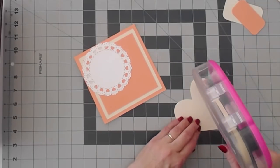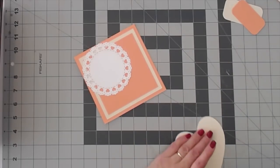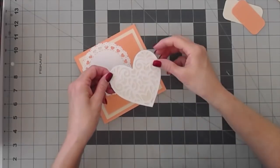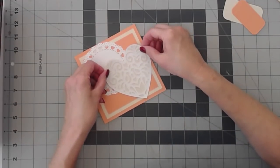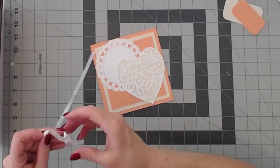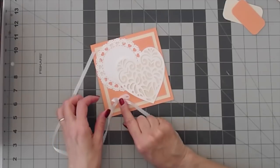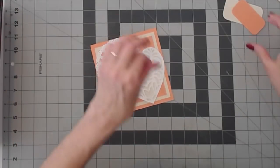I'll use my tape runner to attach the heart to the front of the card. And I think that I'll add a little bow here with my glue gun. Something like that.